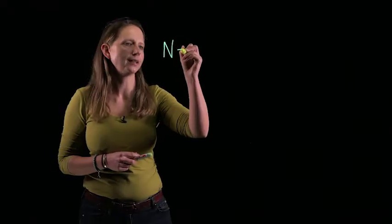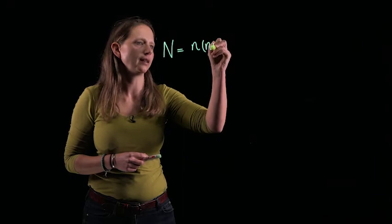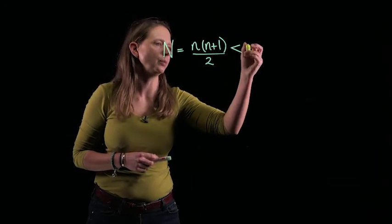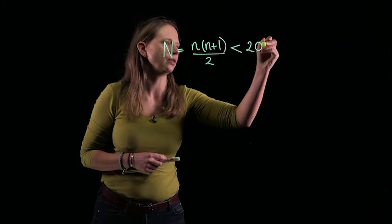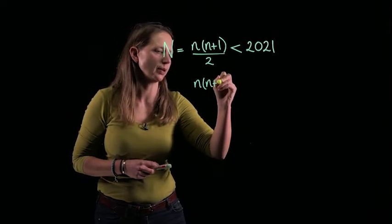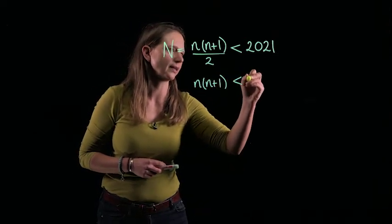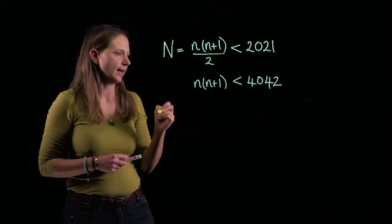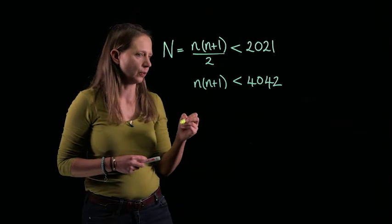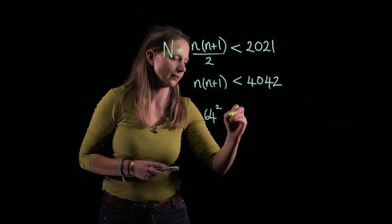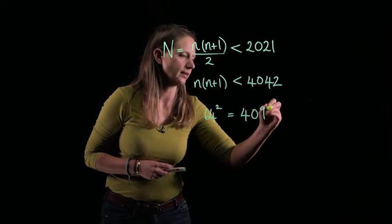The last thing to do, we're looking for n. We know that our values of n are triangular numbers, and we need them to be less than 2,021. Well, that means that n times n plus 1 has to be less than 4,042. And it's a case of finding what values will work.